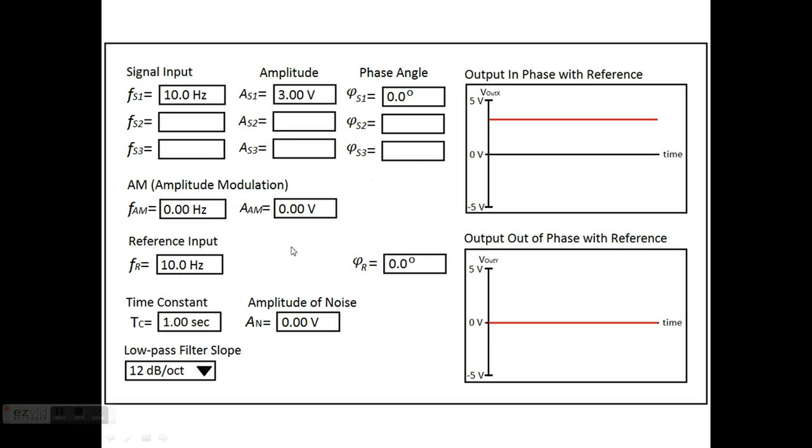The reference is up next. The reference has no amplitude because it's of unit amplitude. It has a frequency here, denoted FR, and a phase with respect to the same zero line as before, denoted phi R here.